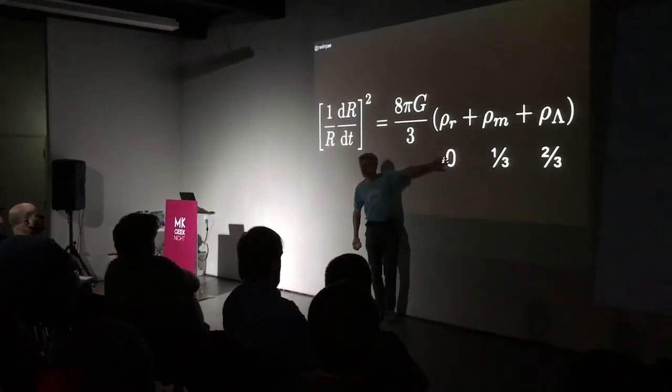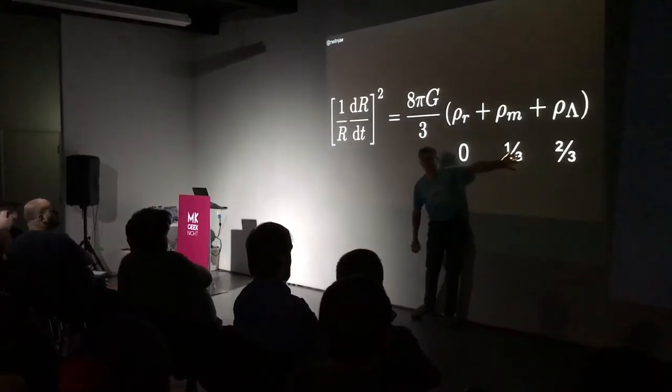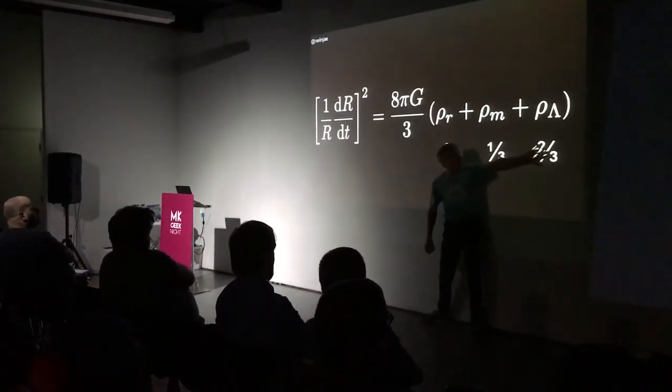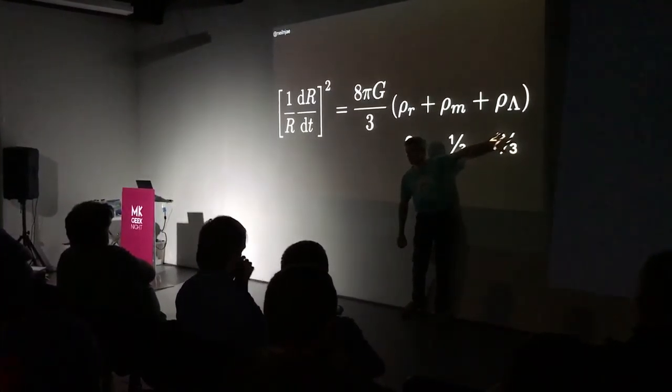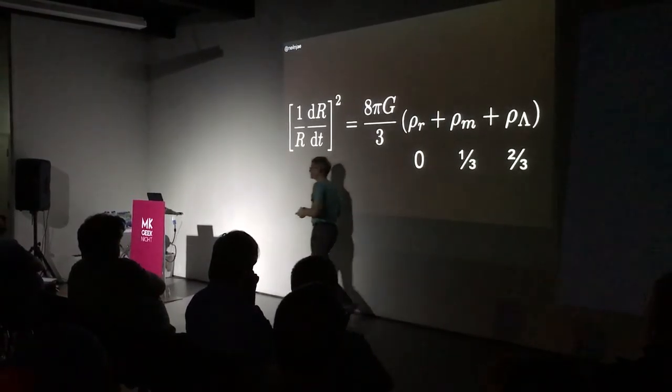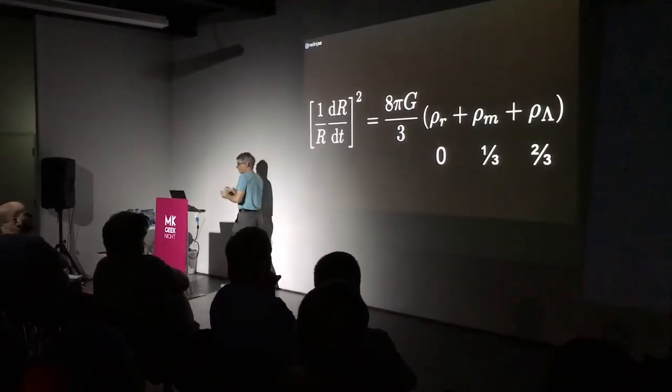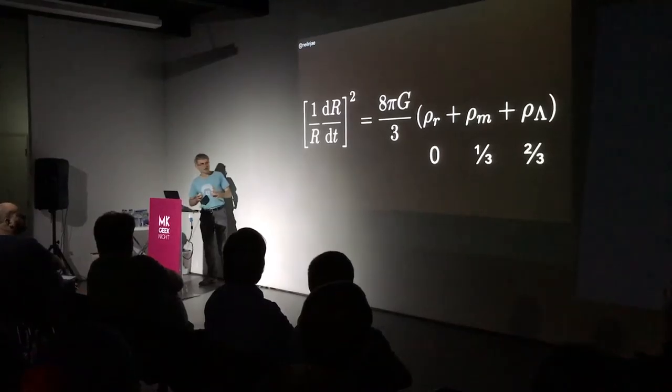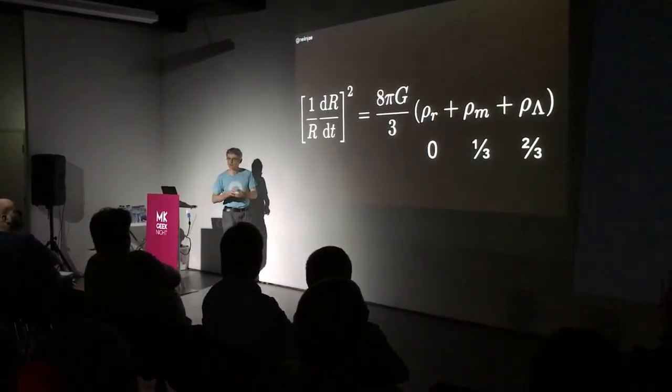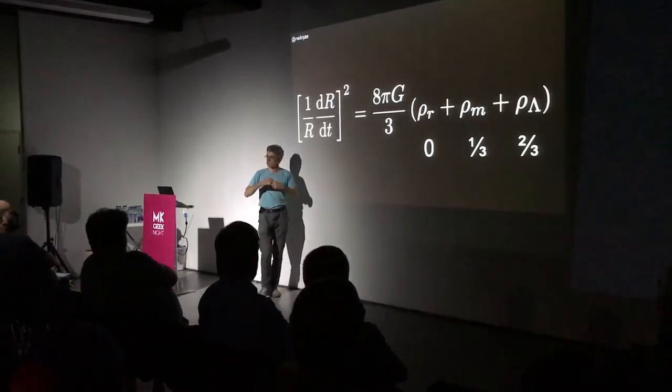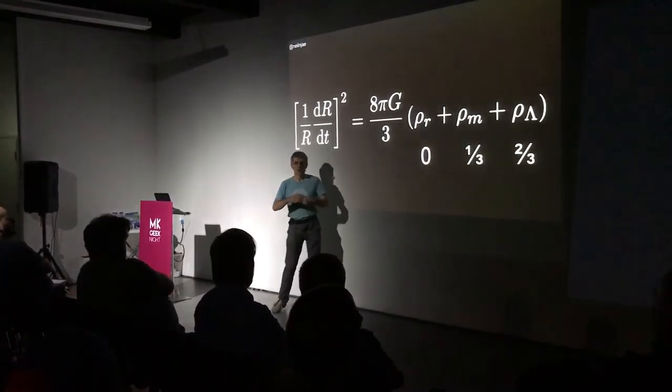Radiation is having no particular effect at the minute. Matter, including dark matter, is about a third of the universe. And dark energy is about two-thirds of it. So we've got some idea of what dark energy is. We know how it's behaving. We've got an idea for the size of its effect. What is it? What's the mechanism that's underlying, underpinning this?